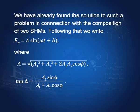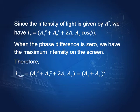At point P the resultant wave is A1·sin(ωt) + A2·sin(ωt + φ), and the amplitude of this combined wave is A = √(A1² + A2² + 2A1A2·cosφ). Since the intensity of light is proportional to A², we have Ip = A1² + A2² + 2A1A2·cosφ.